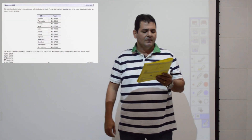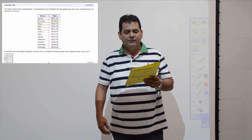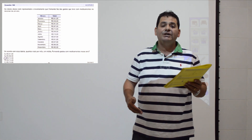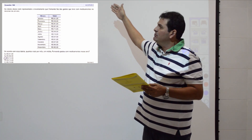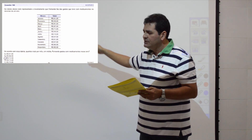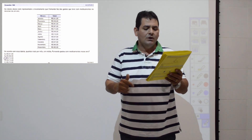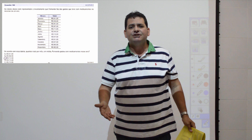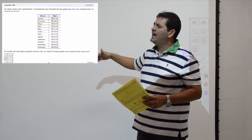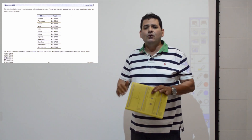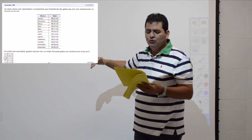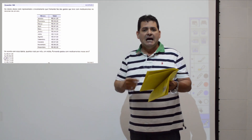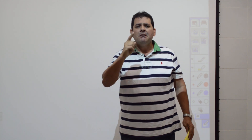Questão 160: tabela de gastos mensais de Fernando com medicamentos durante um ano. Qual a média mensal? Faço o somatório de todos os valores mensais dividido por 12 meses. A média é R$72,00. Item C.